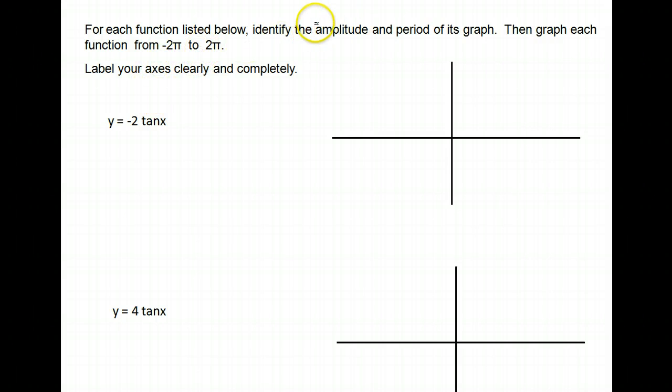The thing is, I'm not sure why they asked you for amplitude, because tangent functions, if you'll recall, this is what a typical tangent function looks like. If here's my axes, it has asymptotes, and those asymptotes occur at π/2.